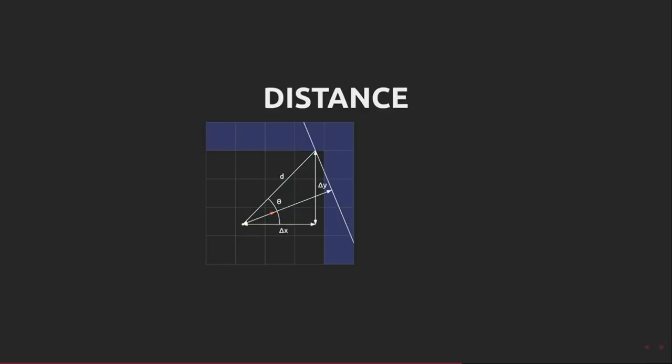We know the distance in x and y from the player's position to the point of intersection, which I'll call capital delta x and capital delta y.